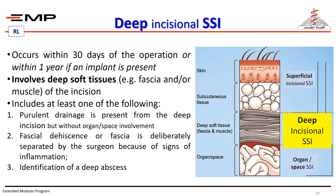Deep incisional surgical site infection is characterized by the following: it occurs within 30 days of the operation, or within one year if an implant is present; it involves deep soft tissue such as fascia and/or muscles of the incision; and it includes at least one of the following — purulent discharge in the deep incision but without organ space involvement, fascial dehiscence or fascia deliberately separated by the surgeon to drain infection, or a deep abscess identified by direct examination, during re-operation, by histopathology, or by radiological examination.